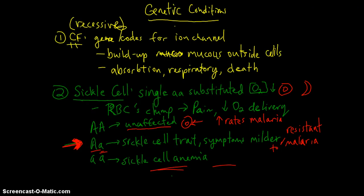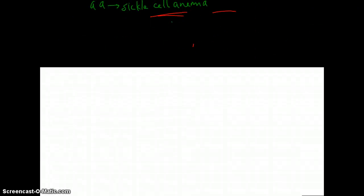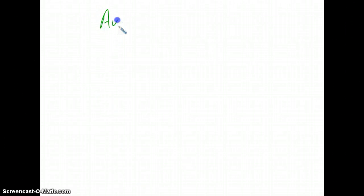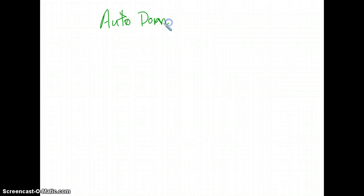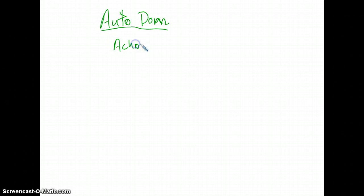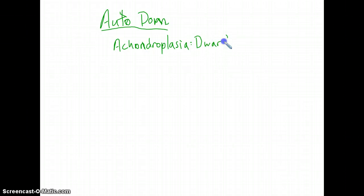Finally, we're going to look at autosomal dominant conditions. There are two with which you need to be familiar: achondroplasia, which is a particular form of dwarfism, and Huntington's disease.